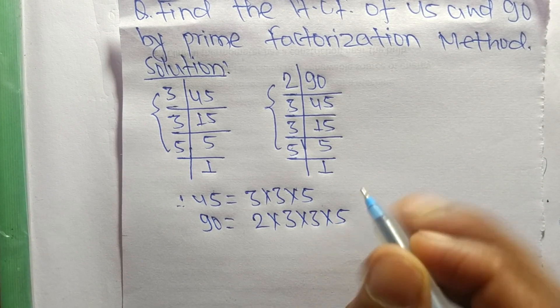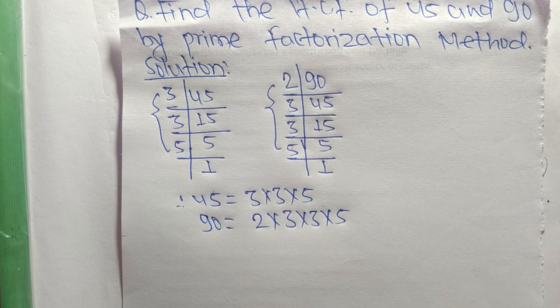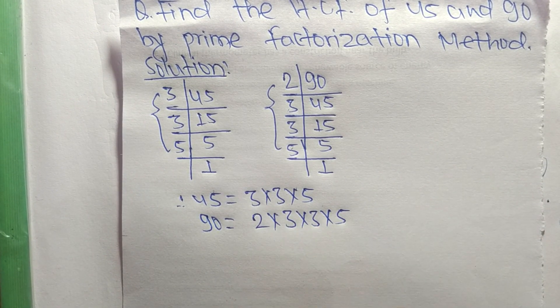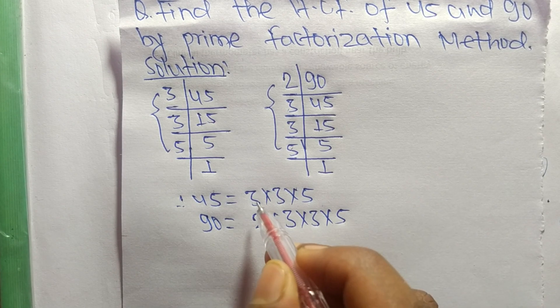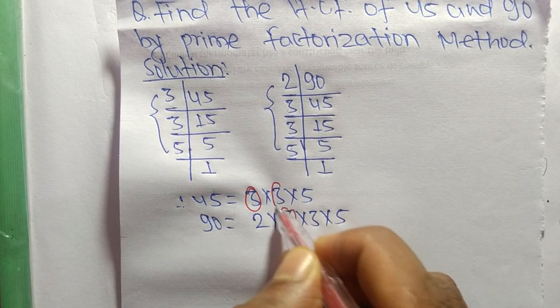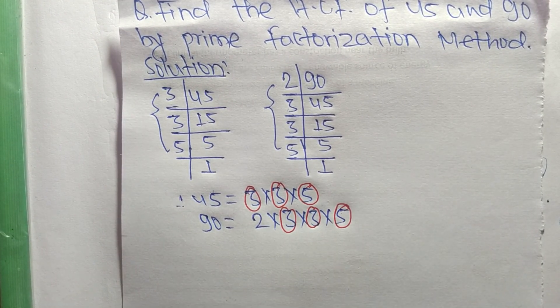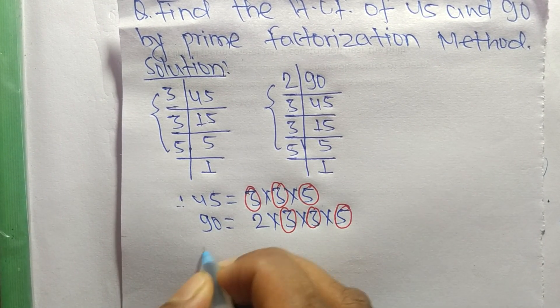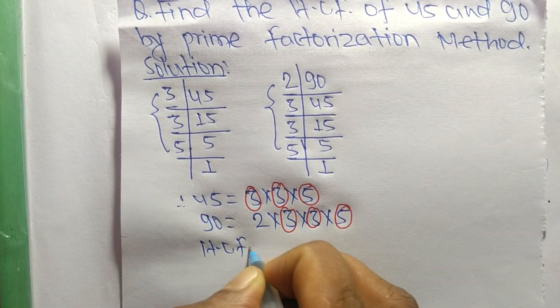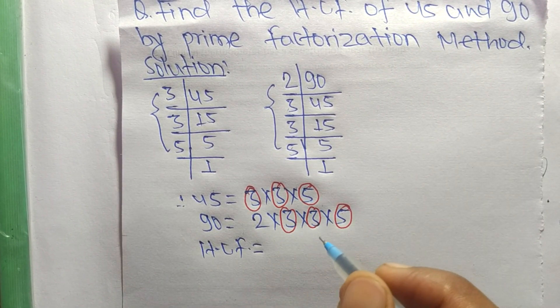So now we select the common factors in this prime factorization. The common factors here are 3, the second one is also 3, and the third one is 5. So now the HCF is equal to the product of common factors which are 3, 3, and 5.